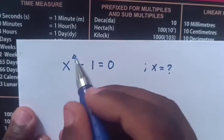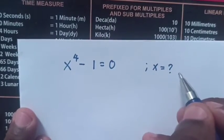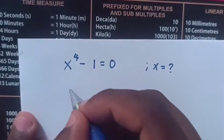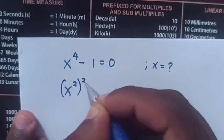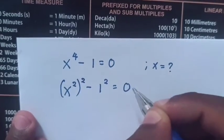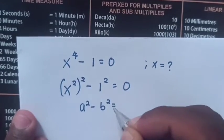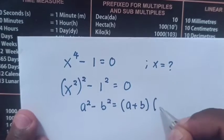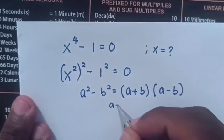To solve x⁴ - 1 = 0, find the value of x. We rewrite x⁴ as (x²)², so the equation becomes (x²)² - 1² = 0. We then apply the rule that a² - b² equals (a + b)(a - b).